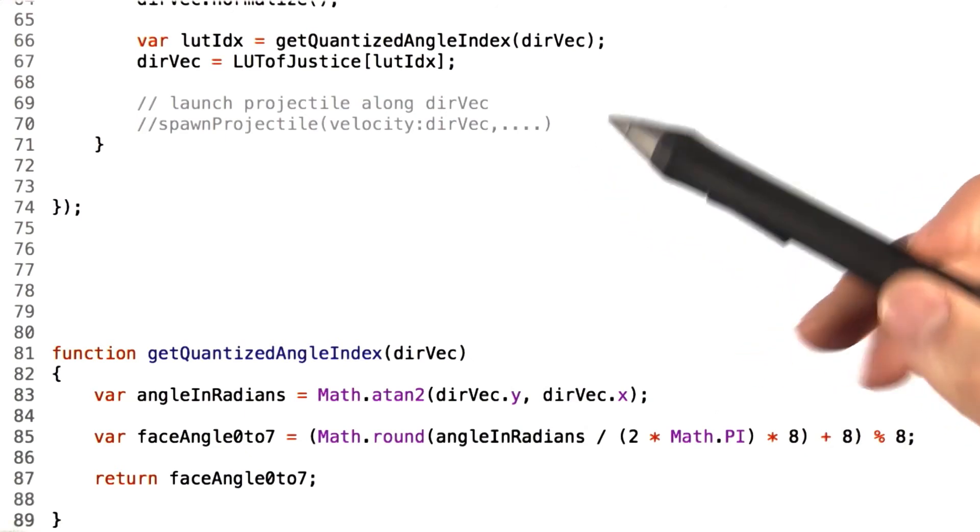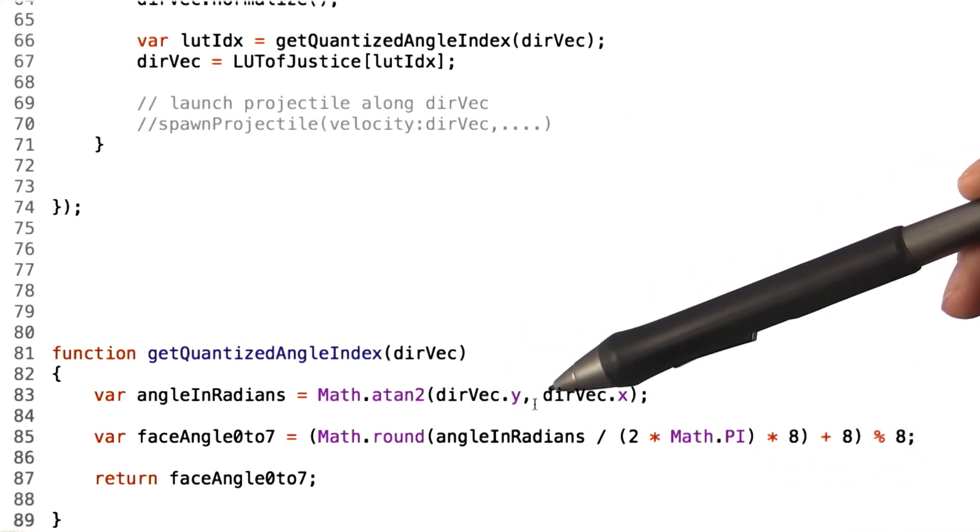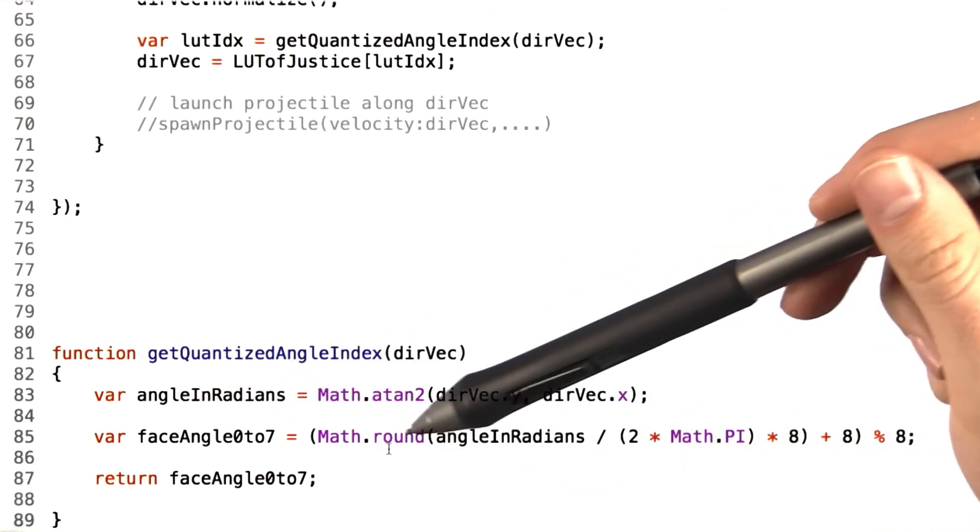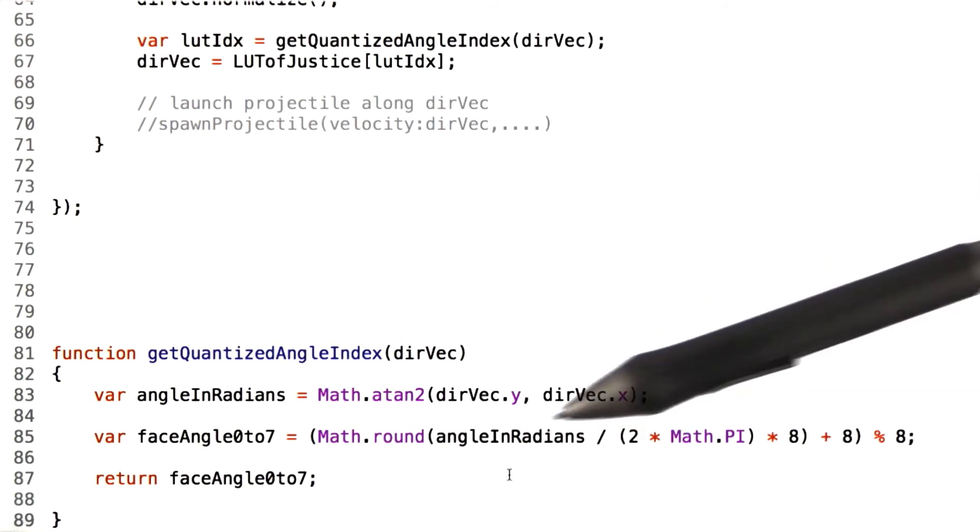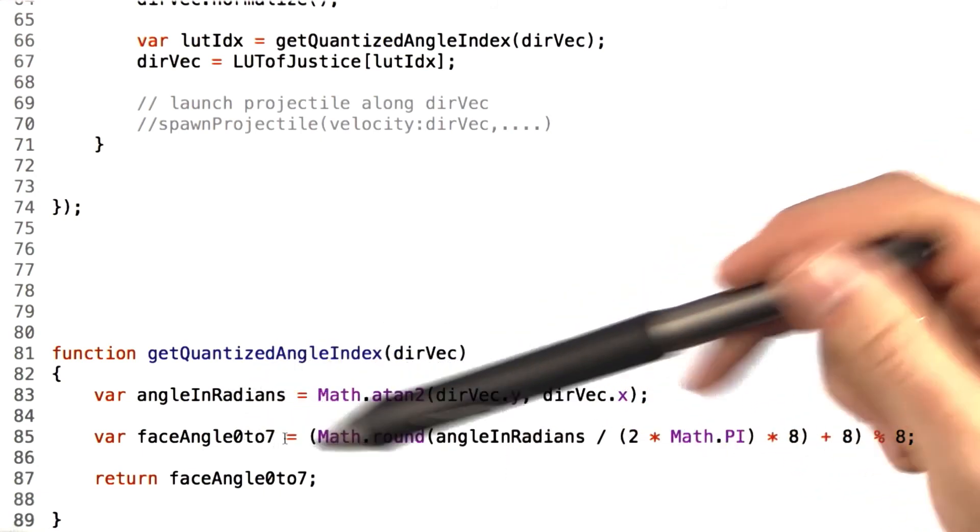The overview is this. We use the atan2 function to find the angle between the input directional vector and the x-positive vector. This gives us an angle between the two in radians. We then use some nice fun little tricky math here to scale that angle value into an integer between 0 and 7.